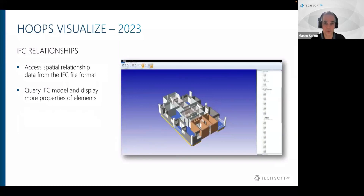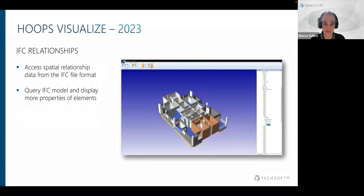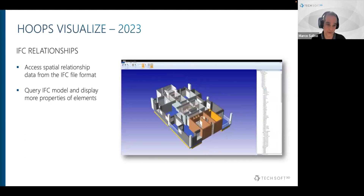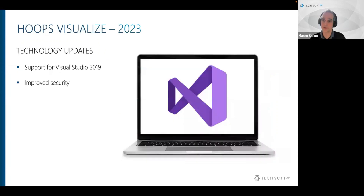We also worked on IFC relationships — Exchange can now extract and make available relationship information from IFC, and we made sure these are also available in Visualize so you can use them in many BIM workflows such as bill of materials reporting, which are critical in many domains especially for BIM and AEC. Same as Communicator, we did technology updates, porting the application to Visual Studio 2019 and addressing known vulnerabilities found during last year.